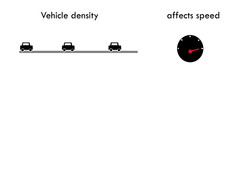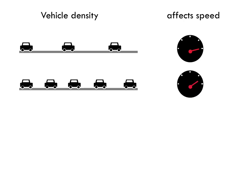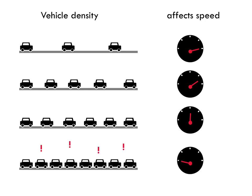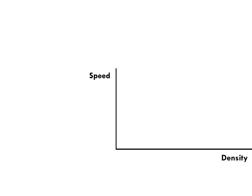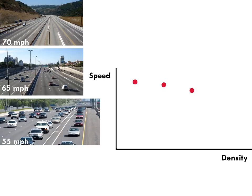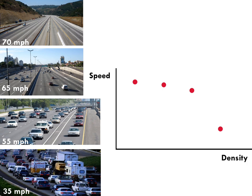When there are few cars on the roadway, drivers can travel quite fast, but as we add cars, drivers must slow down. Here's what that looks like graphically: as we add cars to the roadway, drivers must slow down. You'll notice that this is a non-linear relationship.